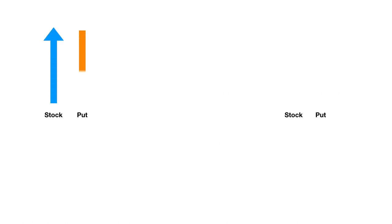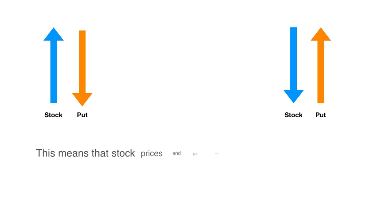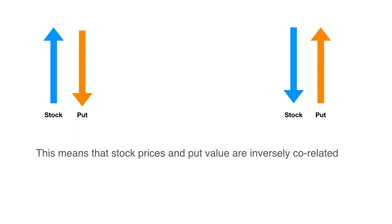Now in case of a put, you would notice that when the stock price goes up, the value of put actually decreases. And when the stock price comes down, the value of the put increases. So the relationship between the stock price and the put can be summarized: if stock price goes up, the value of put comes down. And if the stock price comes down, the value of put goes up, which means that stock prices and value of put are inversely correlated — they move in the opposite direction.